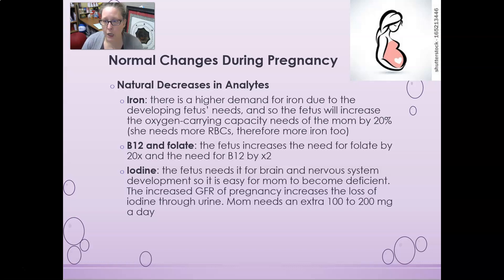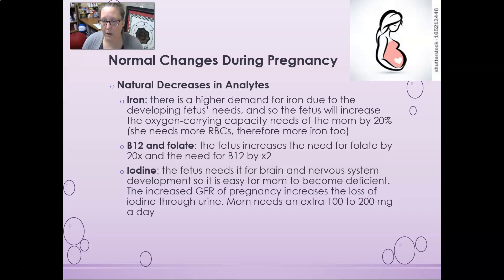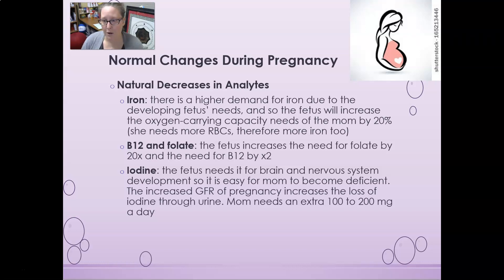B12 and folate are also critical. The fetus will increase the need for folate by 20 times and the need for B12 by 2 times, making them essential for proper fetal development. Iodine is needed for brain and nervous system development as part of the thyroid hormone system, and mom can easily become deficient. With the high glomerular filtration rate of pregnancy, there is increased loss of iodine through urine, so mom needs an extra 100 to 200 milligrams per day — this is part of why prenatal vitamins are really important.